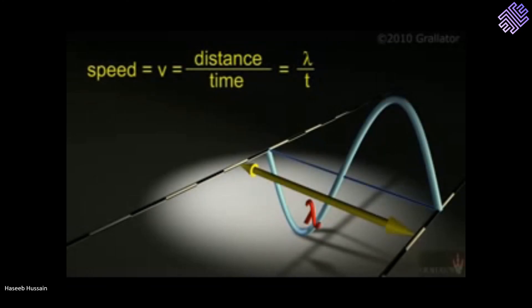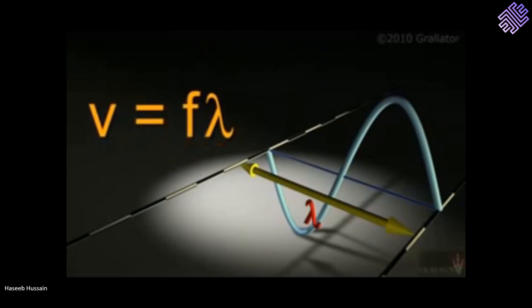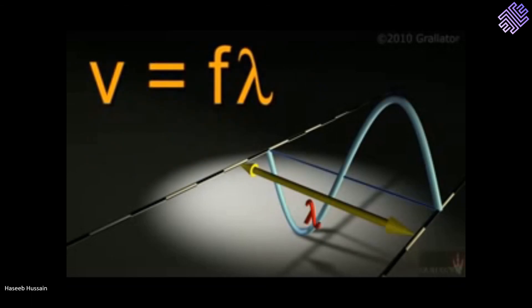Speed equals distance divided by time. Distance is one wavelength, and we know that 1 divided by time period is equal to frequency. By substituting the quantities, we get v equals frequency multiplied by lambda. This equation is known as the wave equation, and it links the key terms that we discussed in this session.